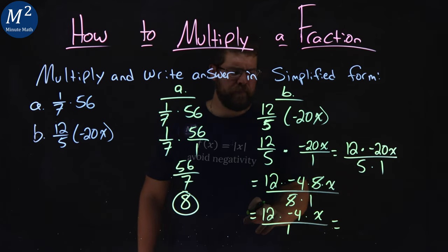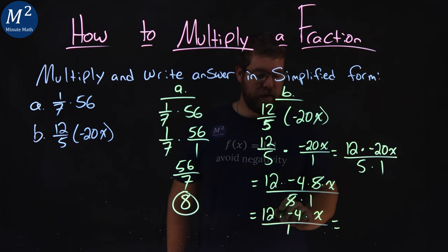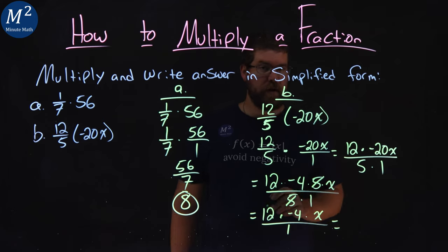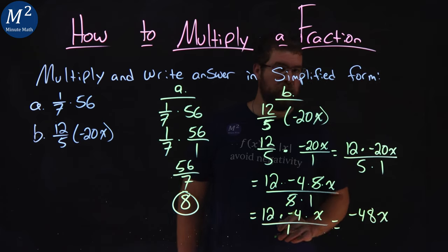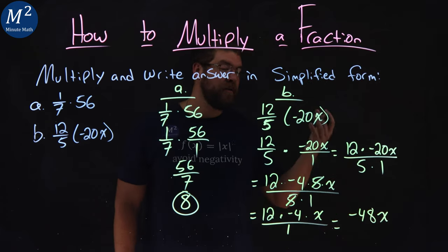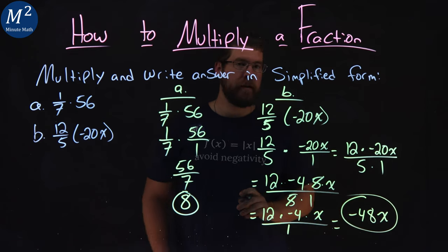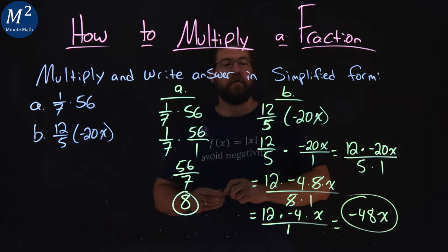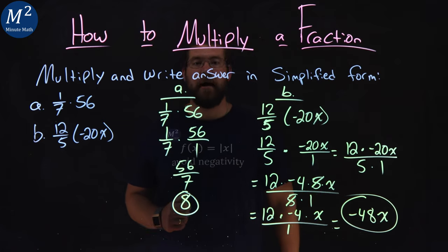Now let's keep multiplying that out. 12 times negative 4—remember that's multiplication by negative 4—12 times negative 4 is negative 48. We have x left in the numerator, and we're divided by 1. We don't need to write it, so we just have negative 48x right here. And that's our answer. When you take 12/5 and multiply it by negative 20x, you get negative 48x.